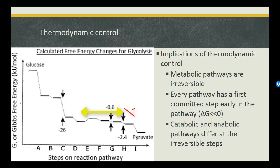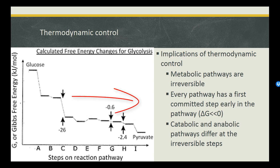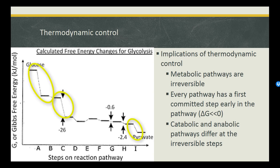As the pathway moves forward and the metabolite of one step is quickly consumed by the next step, we have created a steady-state flow in the forward direction. However, some steps function far from equilibrium and have a large negative delta G — these are therefore irreversible under standard physiological conditions.